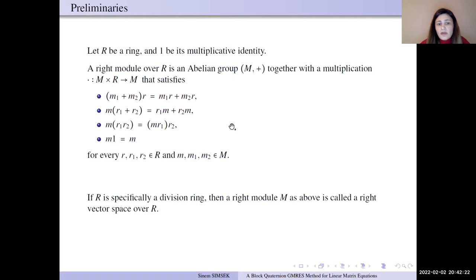So if R is a division ring, especially M is the right vector space. So according to the definition, H^N is the right vector space. Now we can define inner products on this vector space.